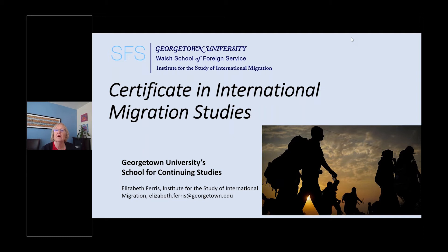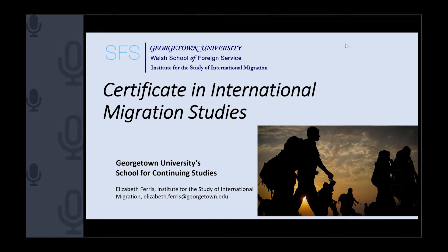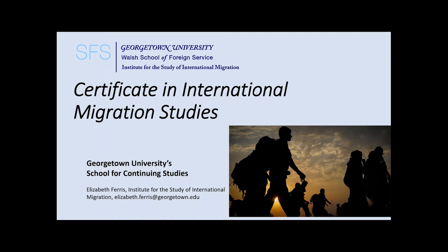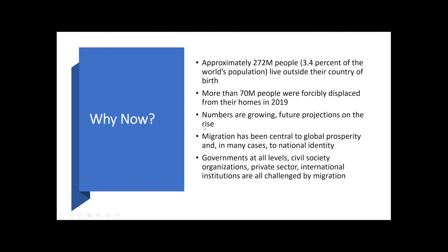I'm going to turn off my camera and give you a short overview of the Certificate in International Migration Studies. I put my email address on the slide and it's also on the last slide, in case you have questions after the presentation. Just a few words about the importance of global migration in our world today. Right now there are about 272 million people — about three and a half percent of the world's population — who live outside the countries of their birth, based on living abroad for at least a year.